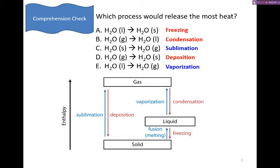Whereas the other three, deposition, condensation and freezing, give off energy. So when wanting to know which one's going to release the most heat, we look for the largest change in energy. And going from a gas to a solid is going to give off the most heat because it goes from the highest energy state to the lowest energy state.